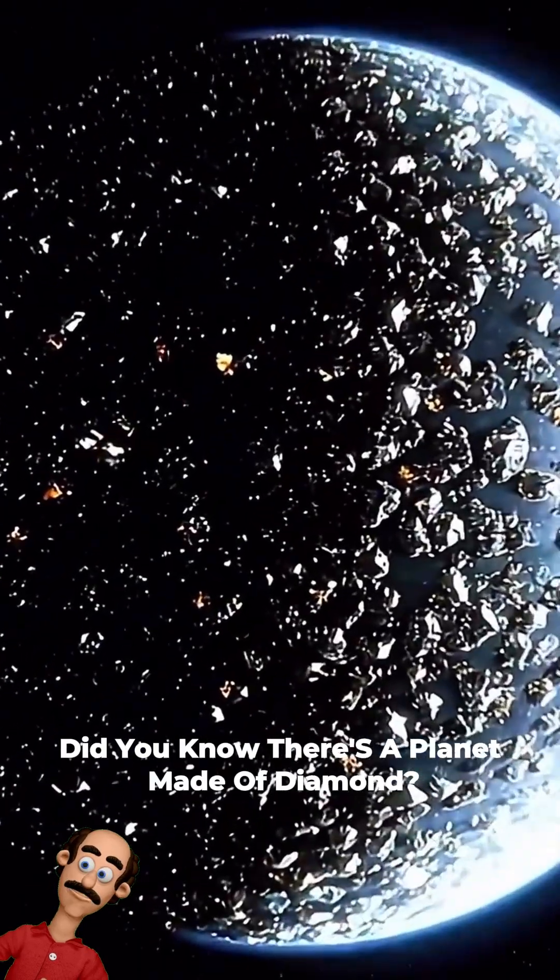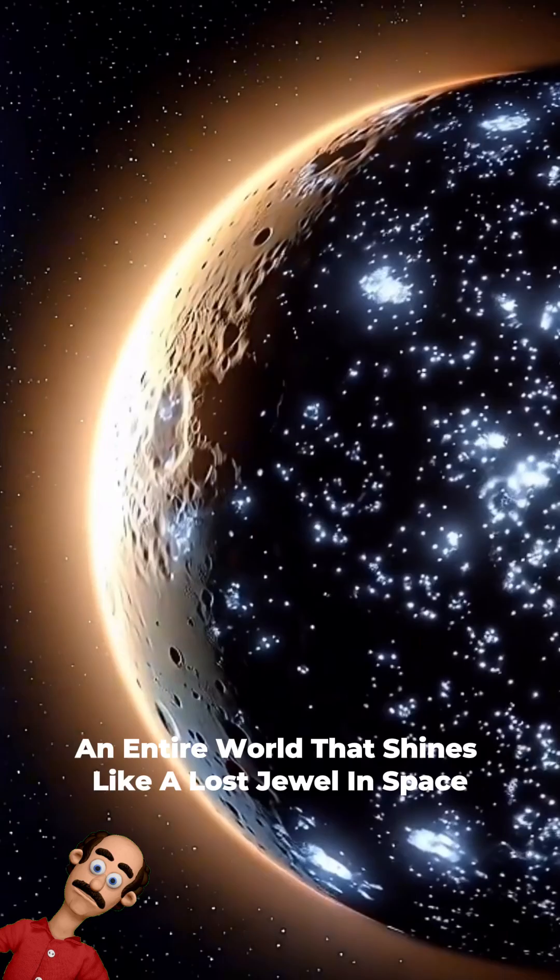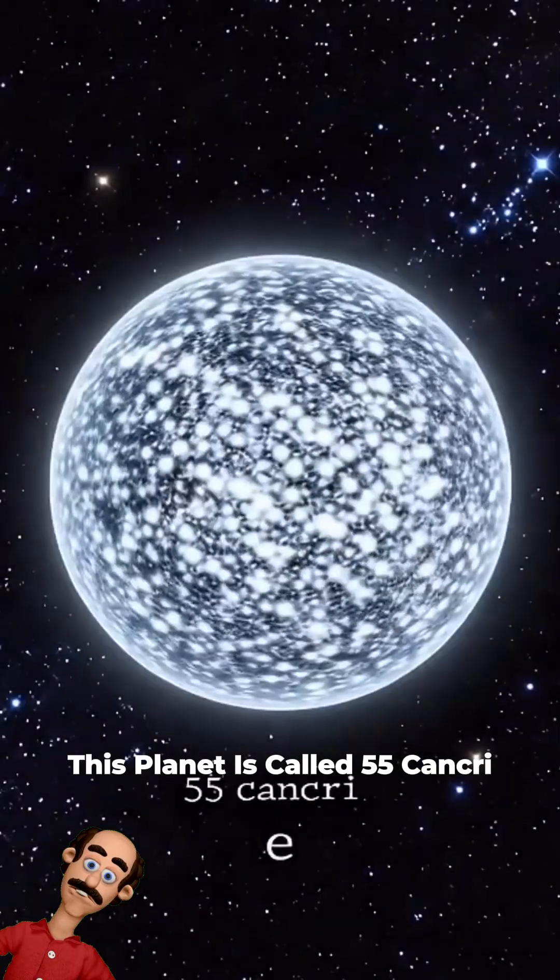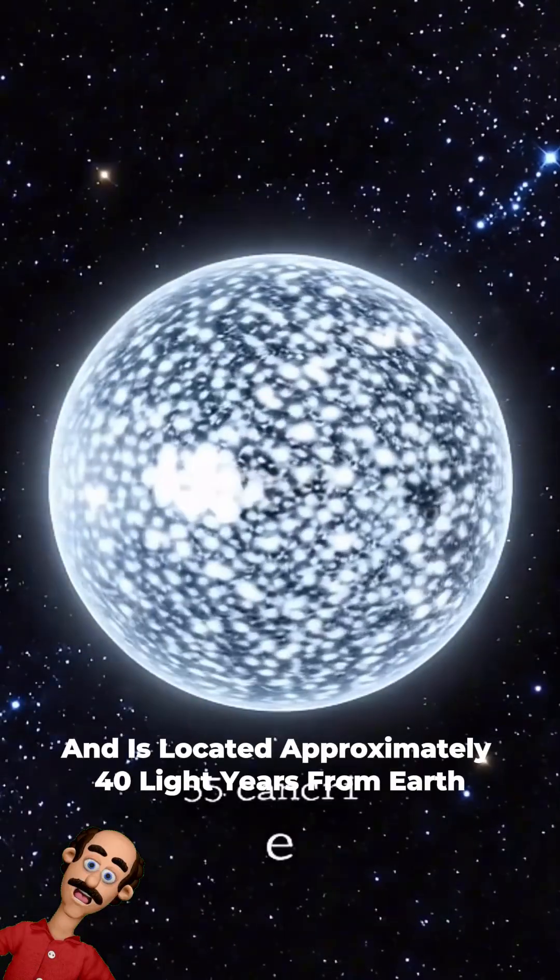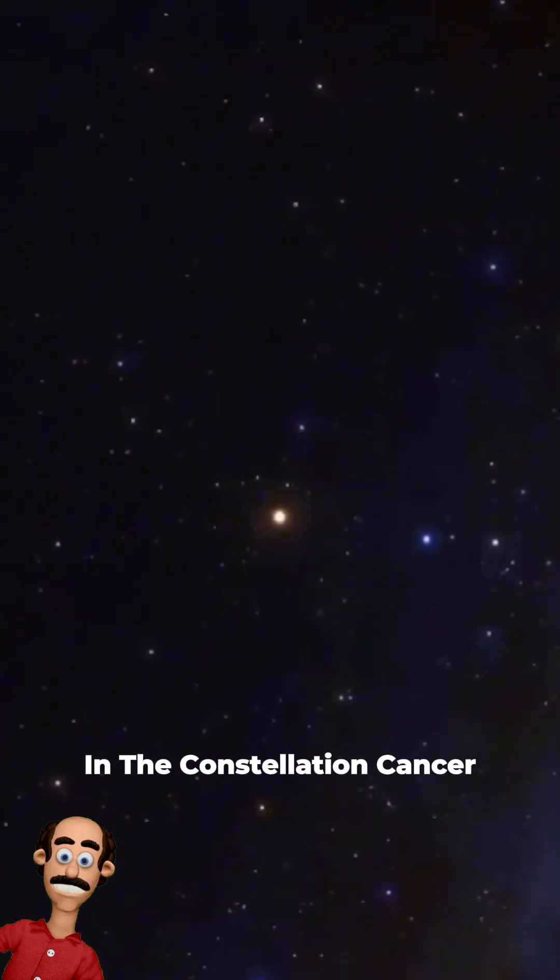Did you know there's a planet made of diamond? That's right, an entire world that shines like a lost jewel in space. This planet is called 55 Cancri and is located approximately 40 light years from Earth in the constellation Cancer.